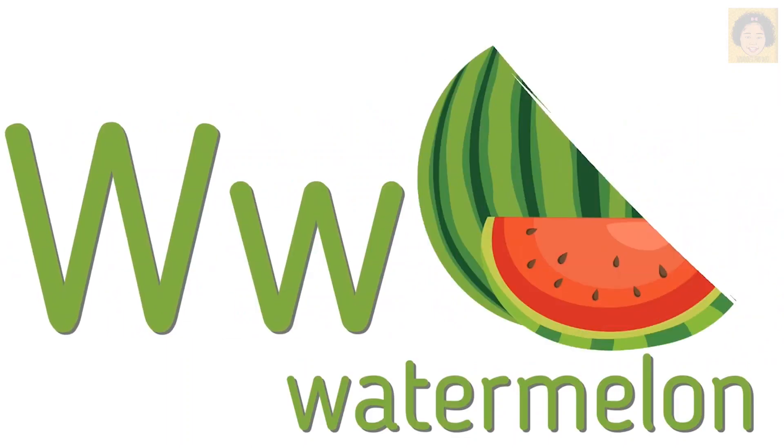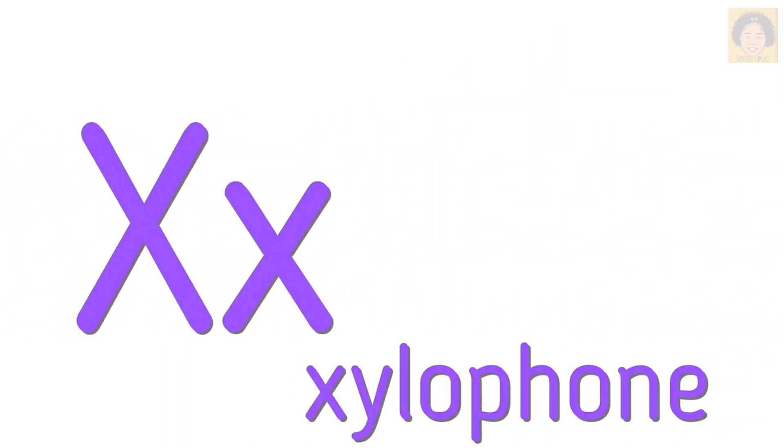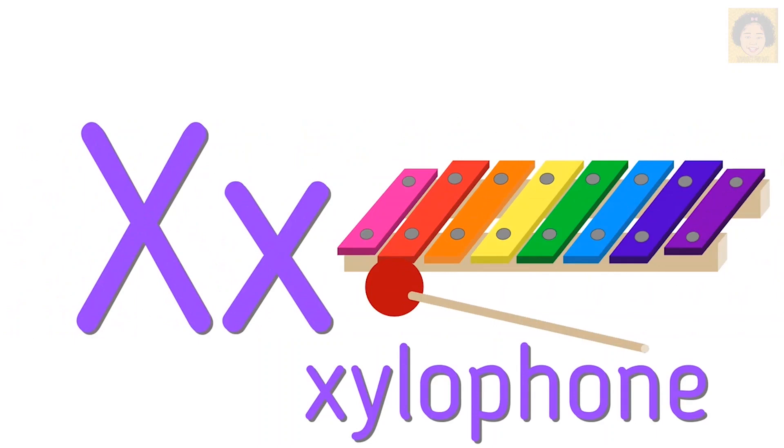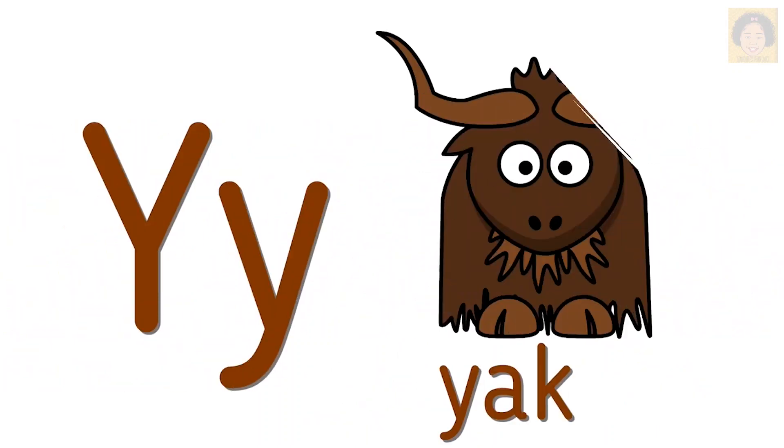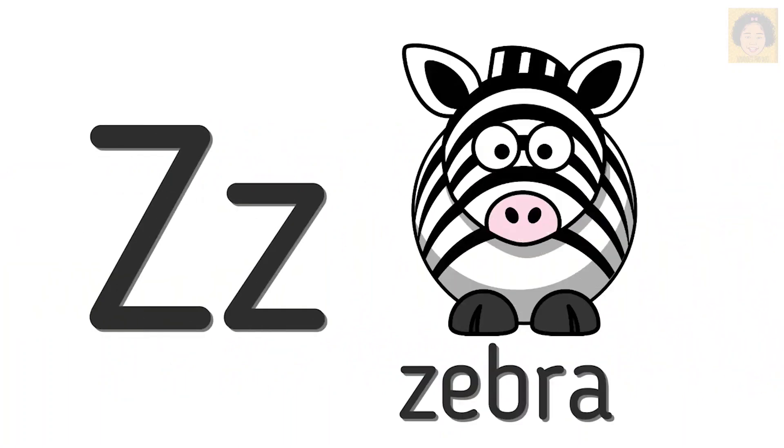W is for watermelon. X is for xylophone. Y is for yak. And Z is for zebra.